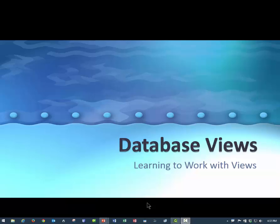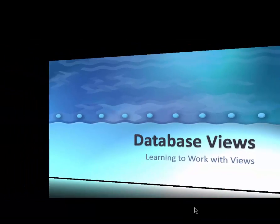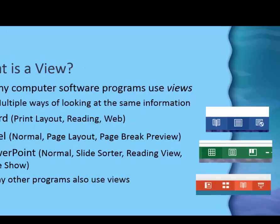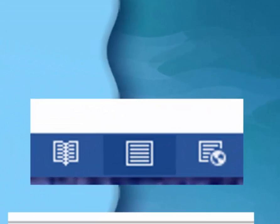One concept we haven't really talked about yet in these videos is a variety of views that you might work with when you're using computer programs. Many computer programs use an assortment of views — they're just different ways of looking at the same information, like the front side of a penny or the back side. In Word, views are down in the bottom right-hand corner, or you can click the View tab. There are three in Word: print layout view, which is the one you usually use; a reading view; and a web view.